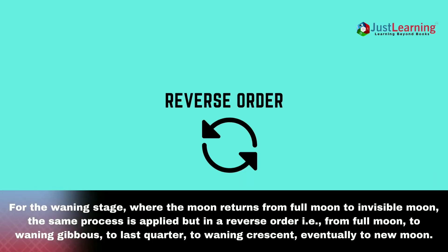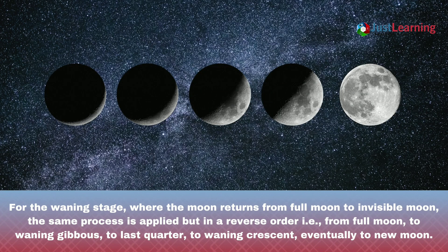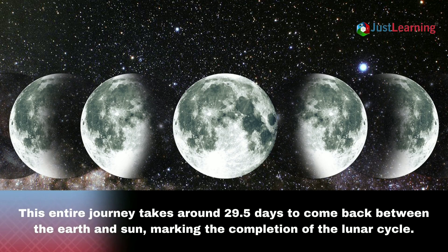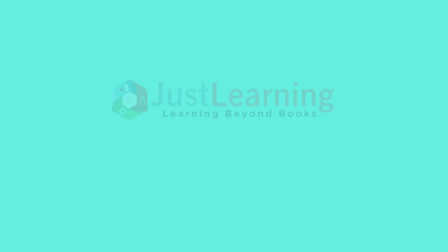For the waning stage, where the moon returns from full moon to invisible moon, the same process is applied but in reverse order — from the full moon to waning gibbous, to the last quarter, to waning crescent, and eventually to new moon. This entire journey takes around 29.5 days to complete, making the completion of the lunar cycle.